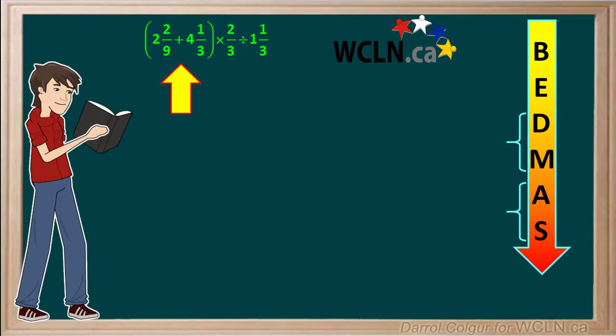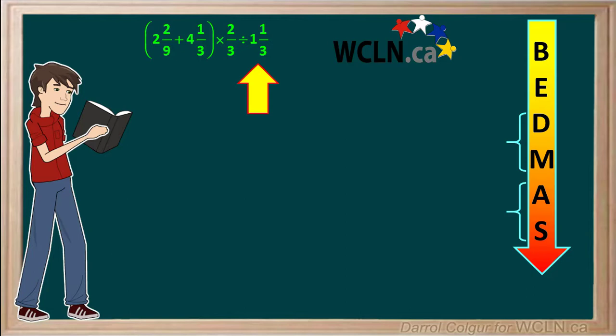The question here is 2 and 2 ninths plus 4 and 1 third in brackets, times 2 thirds divided by 1 and 1 third. Because we have mixed numbers in this question, it's best to convert them all to improper fractions before we start.